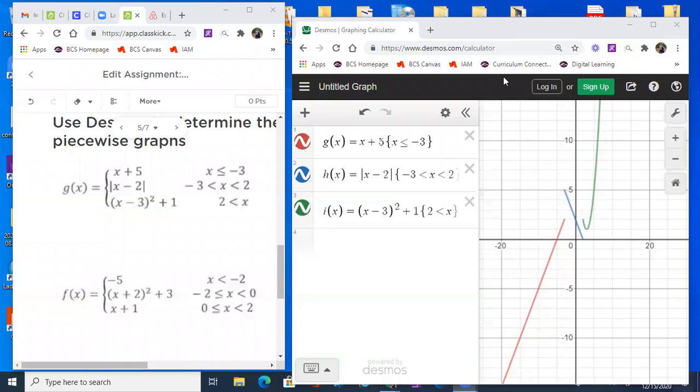All right guys, you'll notice I've set up a piecewise function over here. Looking at g(x) on the left-hand screen, it says x plus 5, x minus 2 in absolute values, x minus 3 squared plus 1, and I typed it into Desmos. One thing I want you to remember is that you need to type in these brackets around that domain restriction.